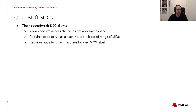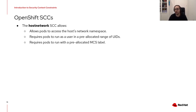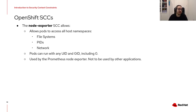The fifth is the host network SCC. It allows using host networking and host ports, but still constrains pods to run with a UID and SELinux context allocated by the namespace. With this SCC you can execute pods that will be able to see, use, and attach to the node network directly. An example in OpenShift is the router pod, which uses this SCC to listen on ports 80 and 443 on the physical network of the worker nodes. The next one is node exporter, which must be used only by Prometheus — it has a lot of permissions including host access to file system, PID, network, plus running as any user. Do not use it; reserve it for monitoring only.